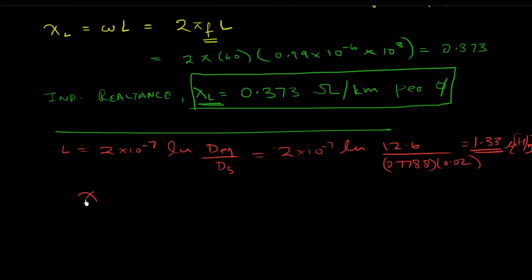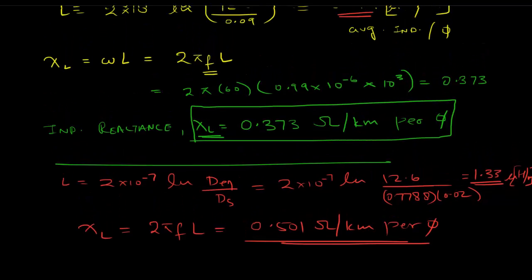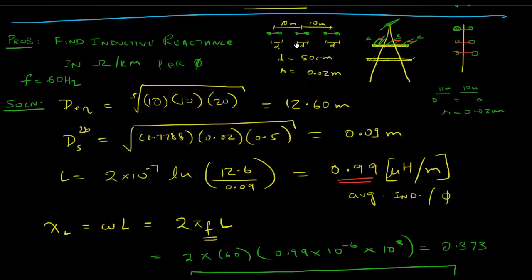You see, this is 1.33, this is 0.99 - the difference, how much lower this is. This would obviously have a direct impact on your XL value because your XL now becomes 2πfL, and you plug in this for L, and your value comes out to be 0.501 ohms per kilometer per phase.